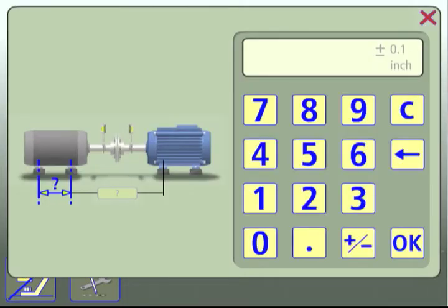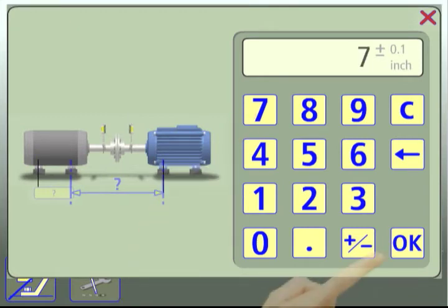Use the keypad to enter the distance between the front and back feet of the stationary machine. Then touch OK and enter the distance between the front feet of the stationary machine and the movable machine. Touch OK.